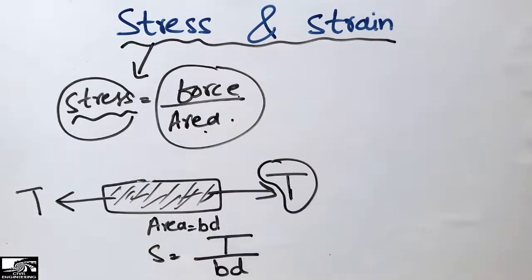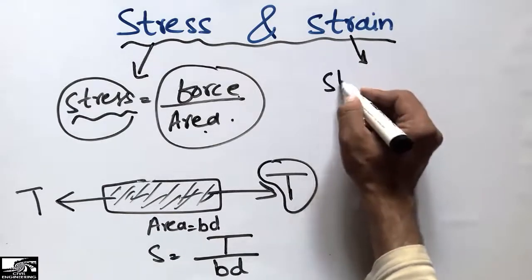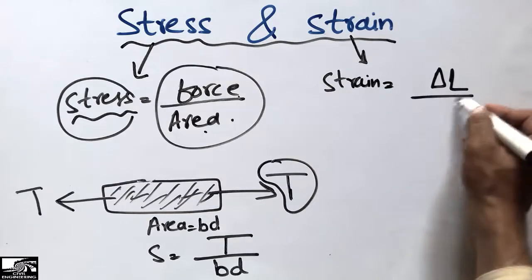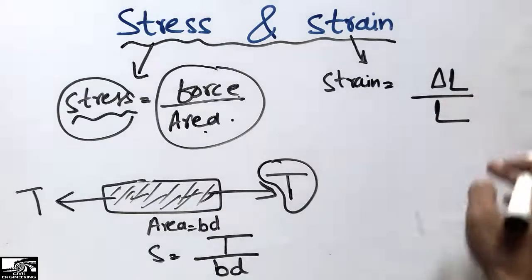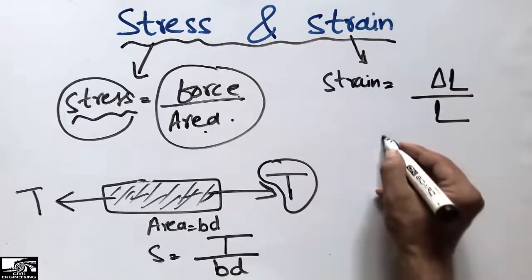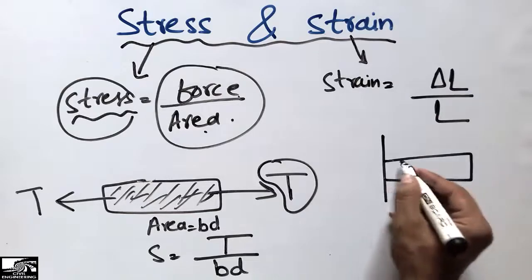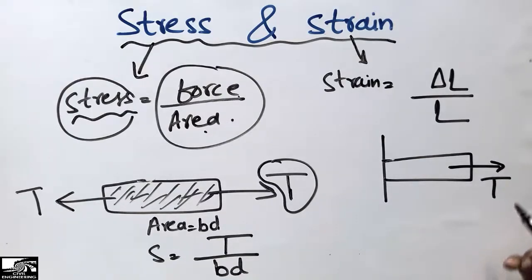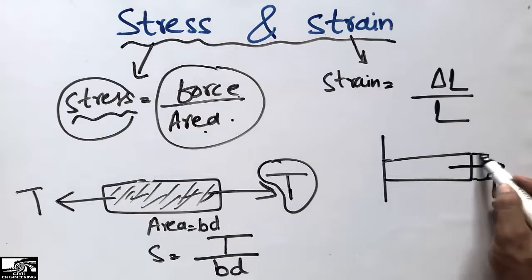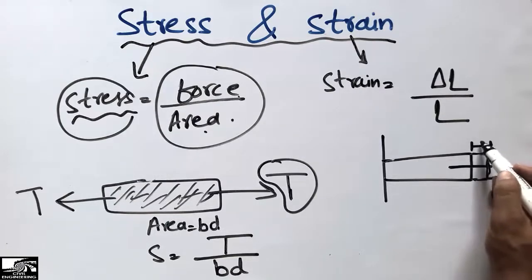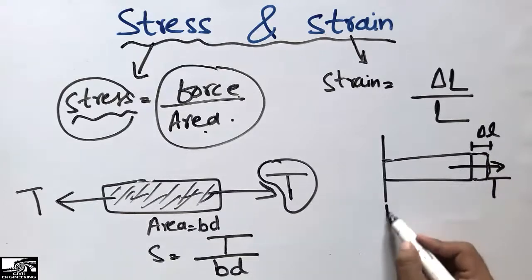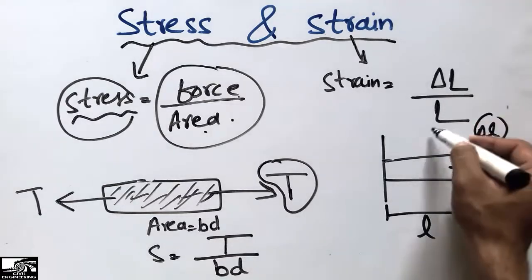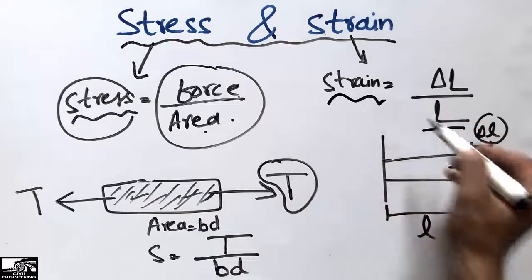Now for the definition of strain: strain can be defined as the change in length divided by the original length of the object. If we consider an object fixed at one end and flexible at the other, with a tensile load T applied, it displaces to a new point. That displacement is the change in length, and dividing it by the original length gives us the strain in the object.